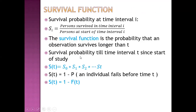The survival function gives the survival probability at time interval i as persons survived in time interval i divided by persons at start of time interval i. The survival function is the probability that an observation survives longer than time t. Survival probability up to time interval t since start of study is the multiplication of survival probabilities at various time intervals starting from 0. So S(t) equals 1 minus F(t).